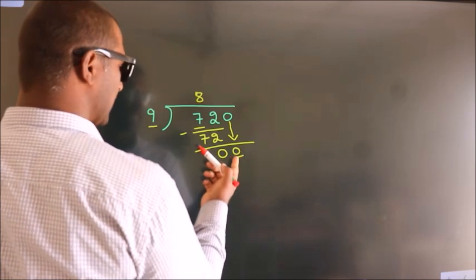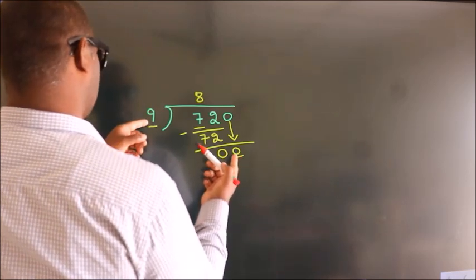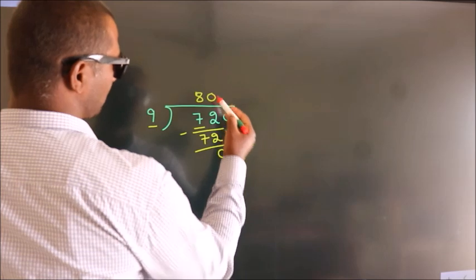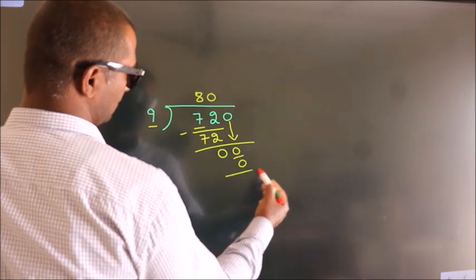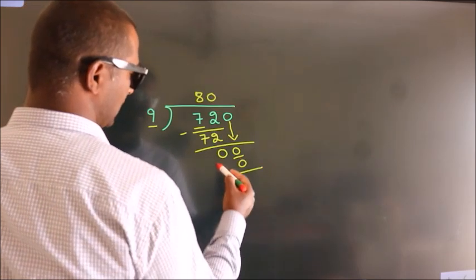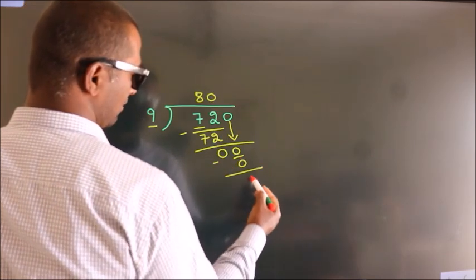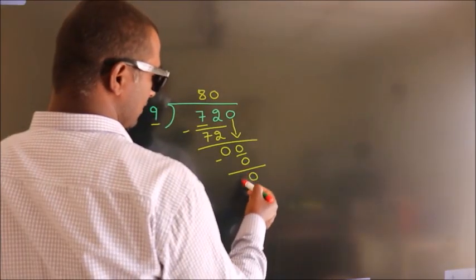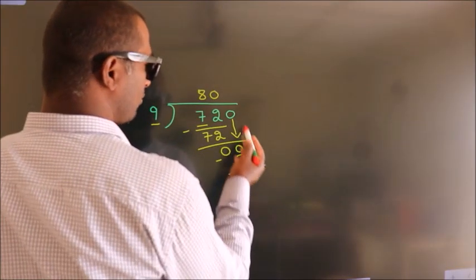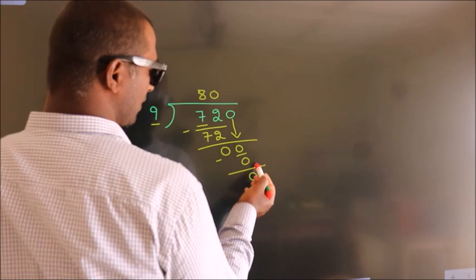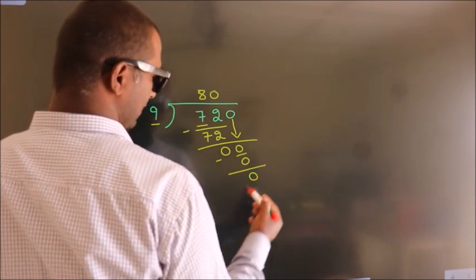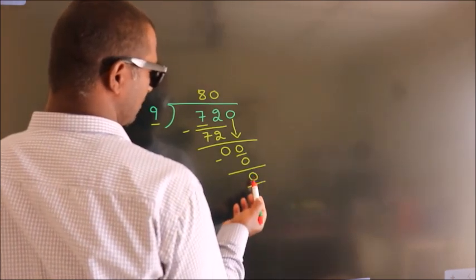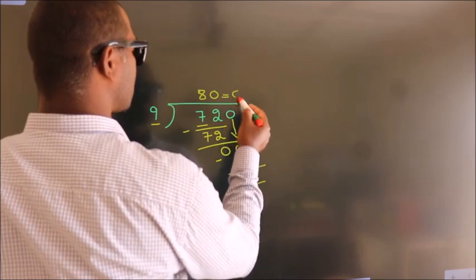When do we get 0? In the 9 times table, 9 times 0 is 0. Now we subtract, we get 0. After this, no more numbers to bring down and we got remainder 0. So this is our quotient.